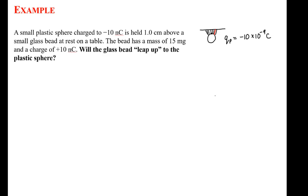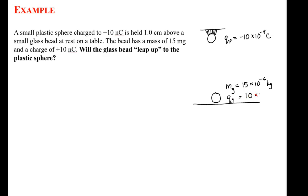We know that sphere is one centimeter above a glass bead at rest on a table. The mass of the glass bead — using subscript g for glass — is 15 milligrams. A milligram is a millionth of a kilogram, so I'll write this as 15 times 10 to the minus 6 kilograms, keeping SI units. The charge of the glass bead is opposite to the plastic sphere's charge: positive 10 nanocoulombs, or 10 times 10 to the minus 9 coulombs.